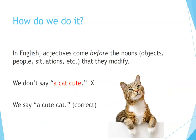How do we do it? In English, adjectives come before the nouns, objects, people, situations, etc. that they modify. We don't say 'a cat cute.' We say 'a cute cat.'